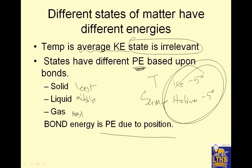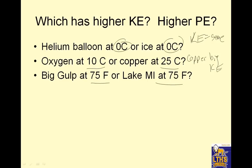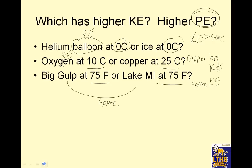Potential energy is due to the position and distance between particles. Kinetic energy is the same for objects at the same temperature — for example, a Big Gulp at 75°C and Lake Michigan at 75°C have the same kinetic energy because they're the same temperature. Potential energy is based on state: a helium balloon (gas) has bigger potential energy. Oxygen gas also has bigger potential energy. Two liquids at the same temperature have the same potential energy.